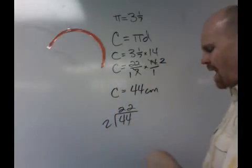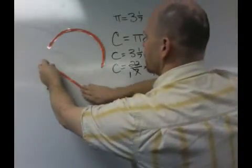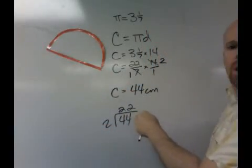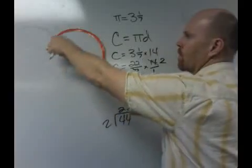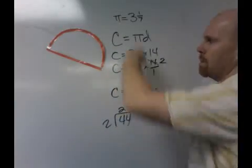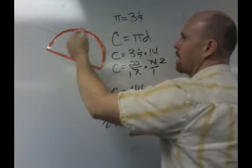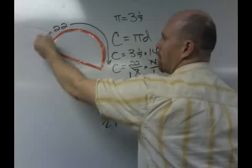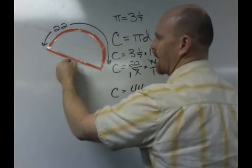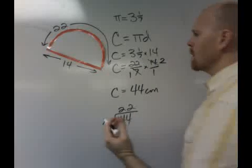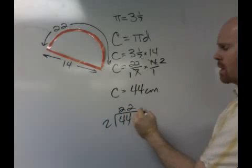And a semi-circle actually looks like this. So, the 22 would be only for the curvy part, and if we want the complete perimeter of the semi-circle, not only would we have the 22 for this curvy part, but we'd also have to add in the 14 for the straight part.